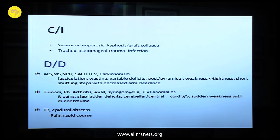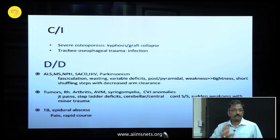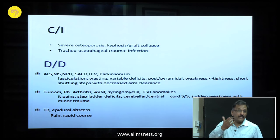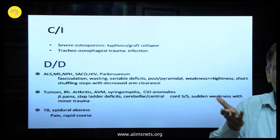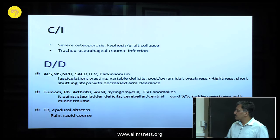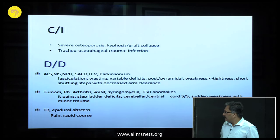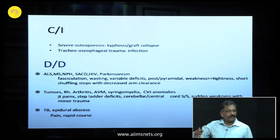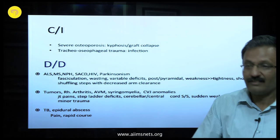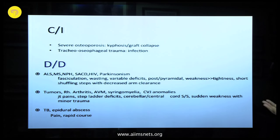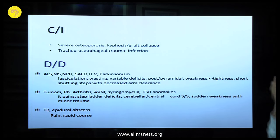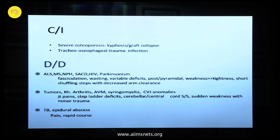Other red herrings include joint pains, and step lateral deficits — you might get some osteophytes somewhere, but it could be indicative of an AVM or some bleed. Cerebellar or central cord signs are also red herrings. Sudden weakness with minor trauma — look for craniovertebral junction pathology, atlanto-axial dislocation. If pain is present and you have not done a contrast study, get one done — you might find enhancement indicative of tuberculosis, rheumatoid, or other pathology. Always remember these red herrings when diagnosing.